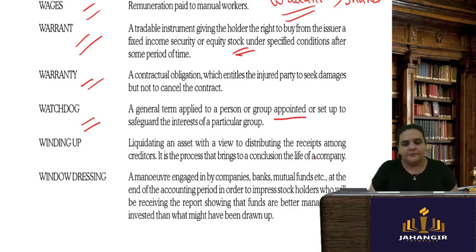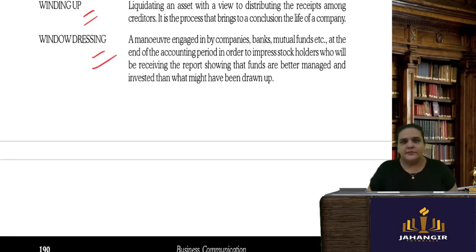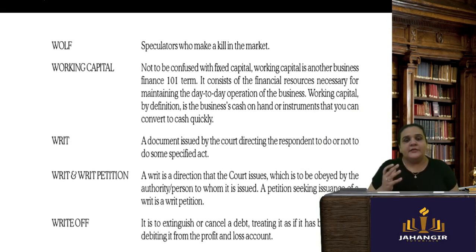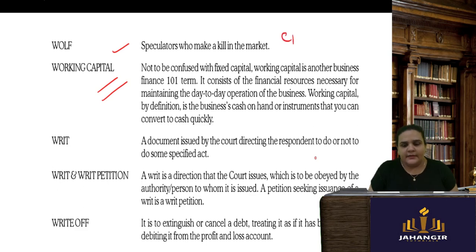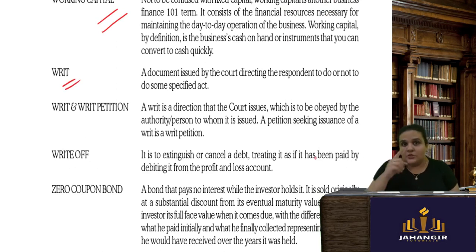A watchdog is a general term applied to a person or group appointed to safeguard the interests of a particular group. Winding up means liquidating the company. Window dressing is when companies make their reports look so attractive that investors are drawn in. A wolf is a speculator who makes a kill in the market. Working capital is current assets minus current liabilities — current assets should be sufficient to cover current liabilities and day-to-day cash requirements.